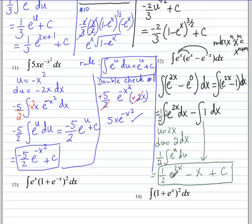Let's quickly take the derivative. I'm just going to do that here for number 12. Derivative of 1 half e to the 2x is 1 half e to the 2x times 2. The 2's cancel. Derivative of negative x is negative 1. Derivative of a constant is 0. So, this is e to the 2x minus 1, which is, in fact, what we started out with. e to the 2x minus e to the 0, which is 1. Thank you.